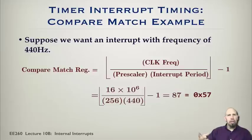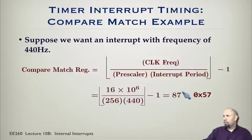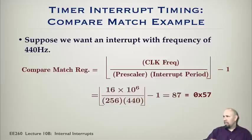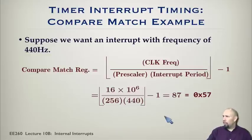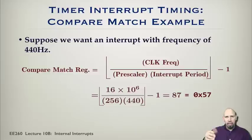The compare match register is set to the floor of that calculation minus 1, giving 87, which corresponds to a specific hex value. For the overflow method, you would take 255, subtract the count value, and reset the counter to that value in the ISR each time. Either way — overflow or compare match — you count the same number of steps before the event occurs.